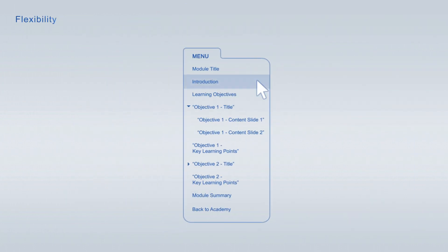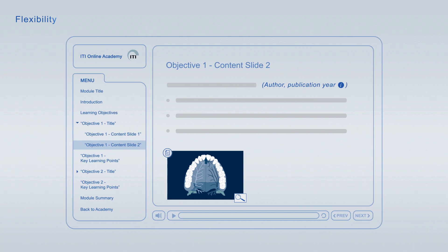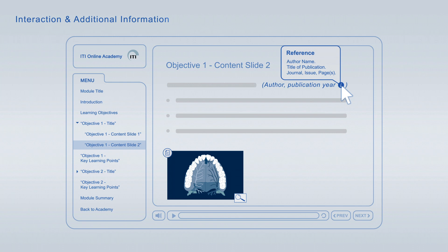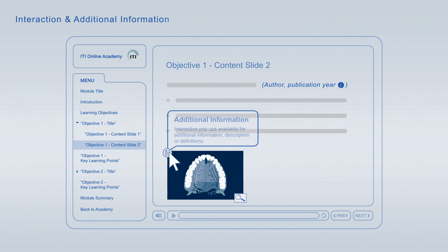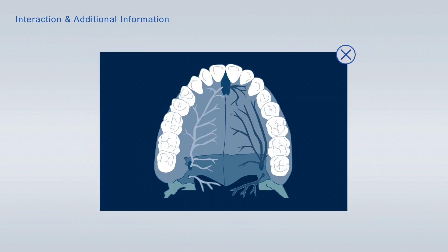You are free to jump from item to item at any time using the module navigation. If you interrupt a viewing session, you can always resume later at the exact point where you left off. The slides are enriched with interactive elements. You can expand literature references to get detailed information about the publication, look up definitions of specific terms, get further information about images, and enlarge images to scrutinise them in more detail.